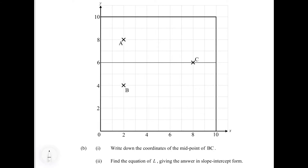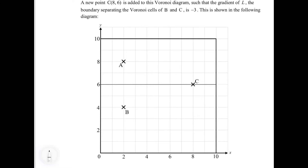Before we answer part A, let's look at the corresponding diagram. We are given that the coordinates of point A are (2, 8) and B are (2, 4). We can see that A is vertically above point B by 4 units. As we know, the boundaries in a Voronoi diagram are the perpendicular bisectors of two adjacent sites. So we have two sites A and B, and we look at the corresponding perpendicular bisector. From the diagram, AB is a vertical line, so its perpendicular bisector must be horizontal.